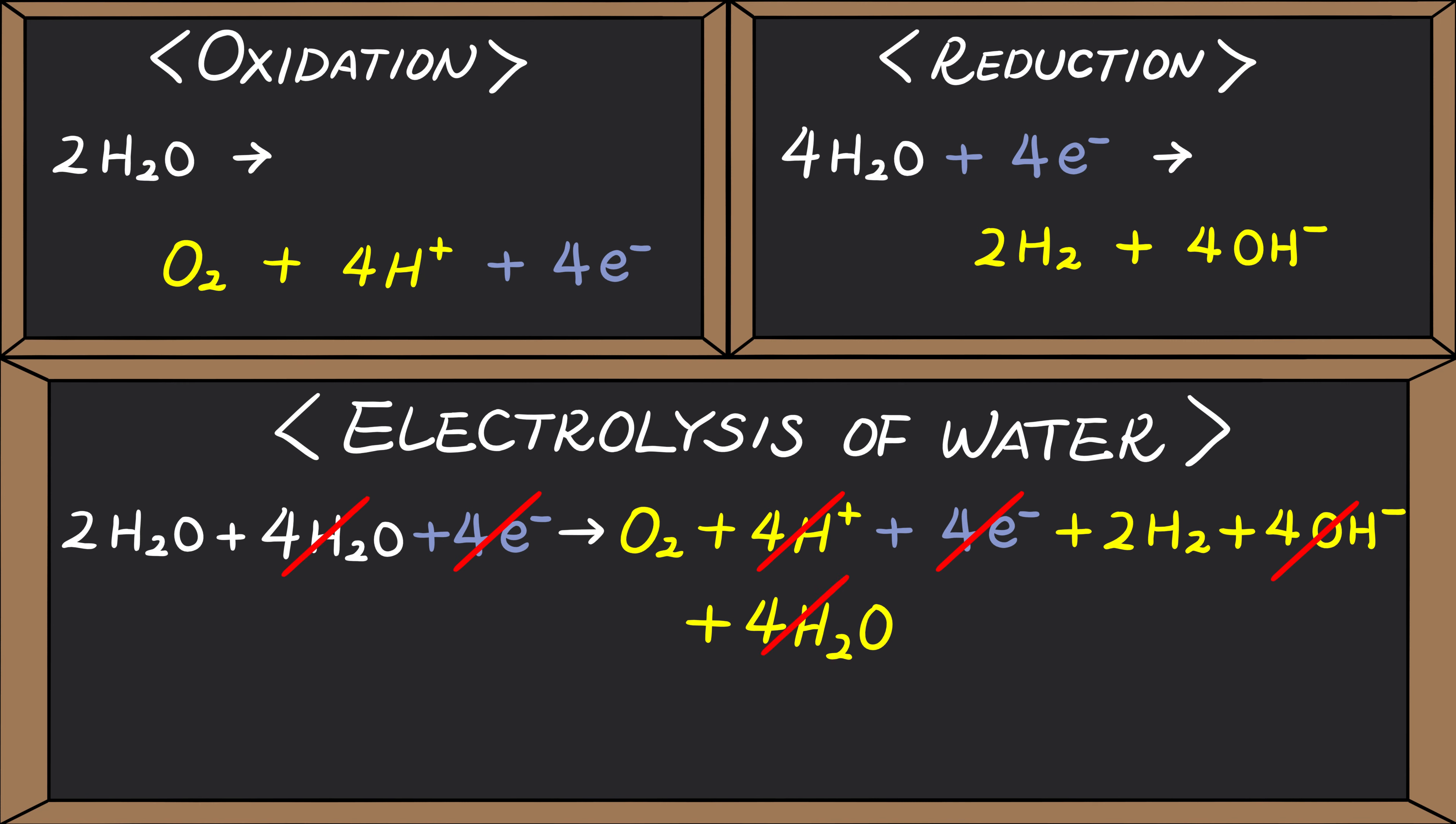Finally, subtracting four H2Os on both sides will give us the final balance equation for this reaction. In other words, electrolysis will turn water into one part oxygen and two parts hydrogen gas.